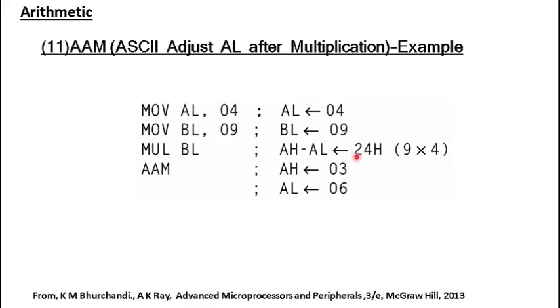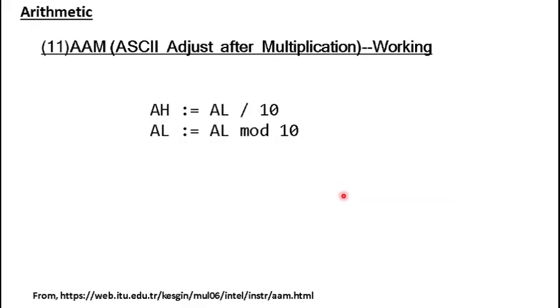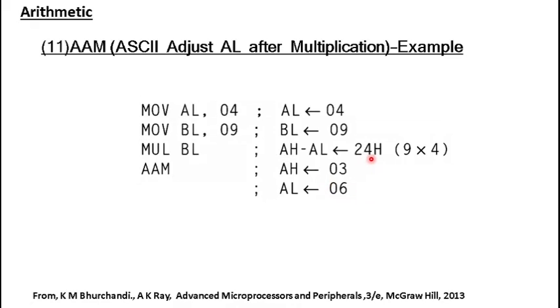The binary format's corresponding hexadecimal representation is 24H, but we need the result as 3 and 6 separately in unpacked BCD format. 3 should be kept in AH and 6 should be kept in AL. So what we do is this 24H will be divided by 10. The quotient will be 3, which will be moved to AH, and the remainder will be 6, which will be moved to AL. The final unpacked BCD representation will be available as 36 spread over AH and AL.